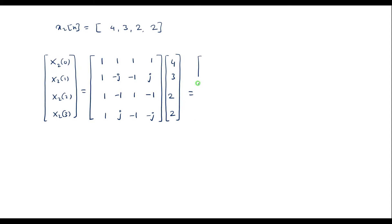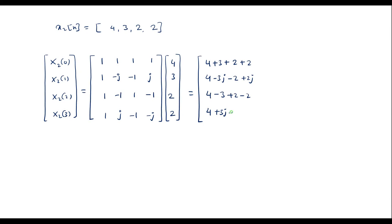Multiplying the two matrices row by column: first row gives 4+3+2+2 = 11. Second row gives 4 − 3j − 2 + 2j = 2 − j. Third row gives 4 − 3 + 2 − 2 = 1. Fourth row gives 4 + 3j − 2 − 2j = 2 + j. So X2 of k = [11, 2−j, 1, 2+j].